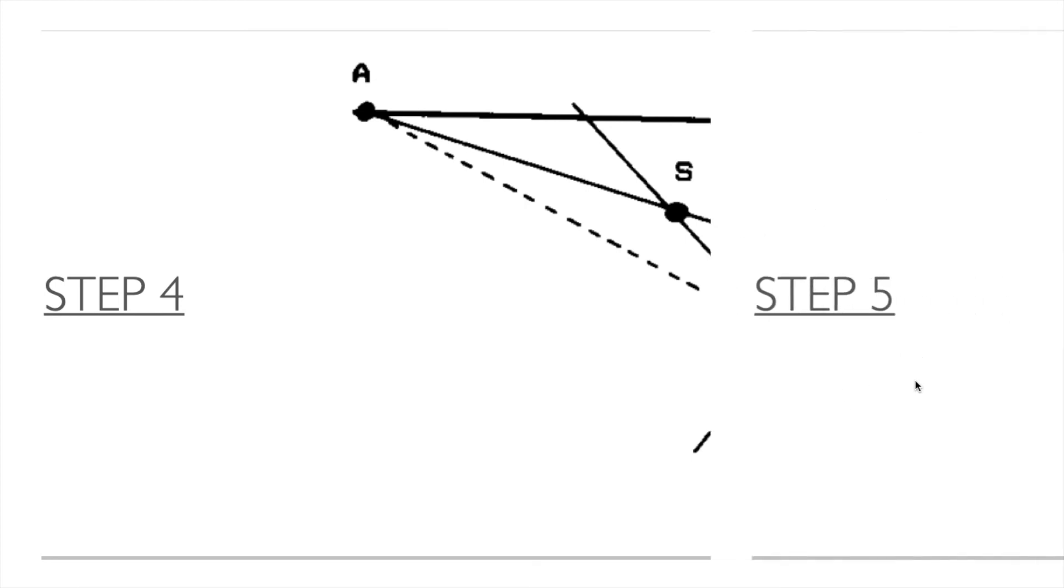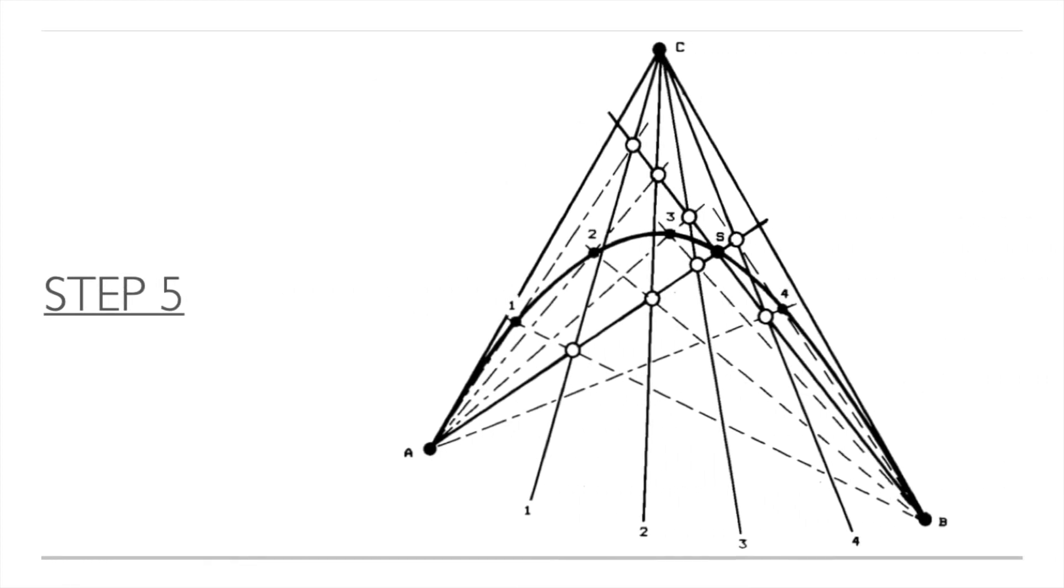Step five, the final step, is to make additional points like point P. When you repeat all these previous four steps with different arbitrary angles, you will get multiple points: one, two, three, four. Then these points are connected and a French curve is drawn.